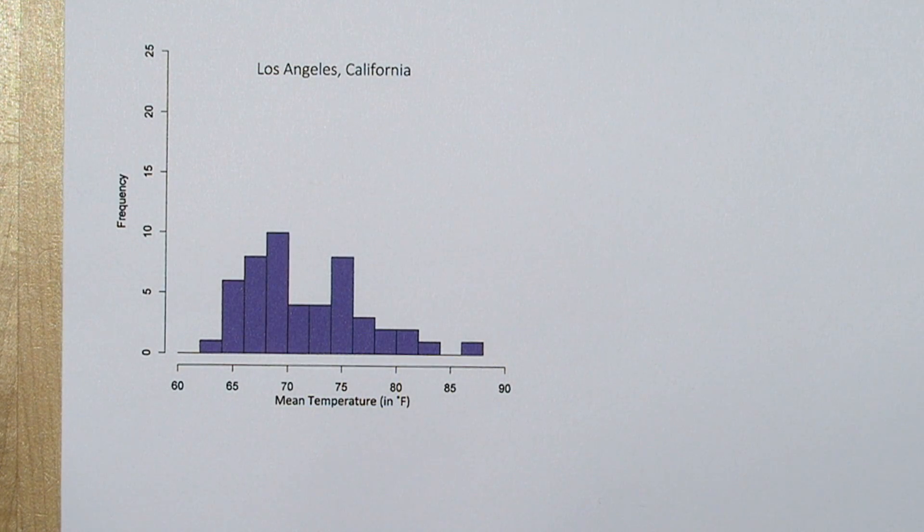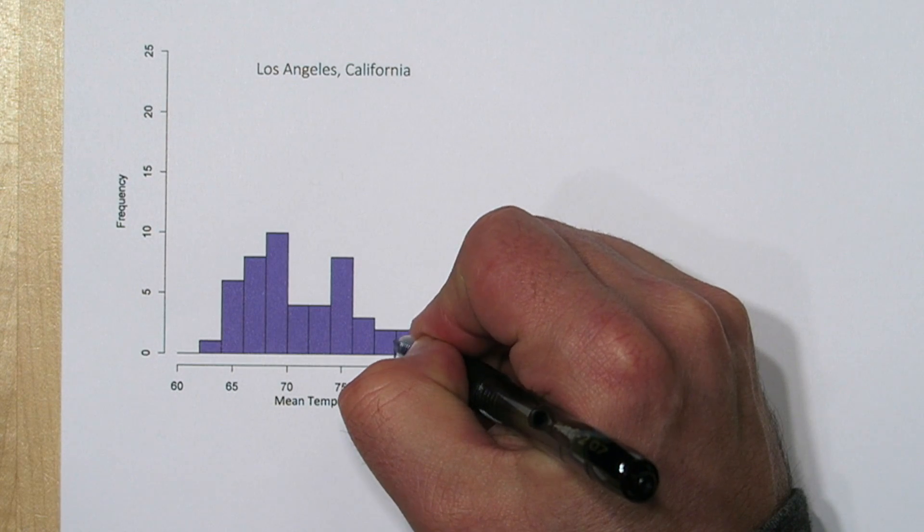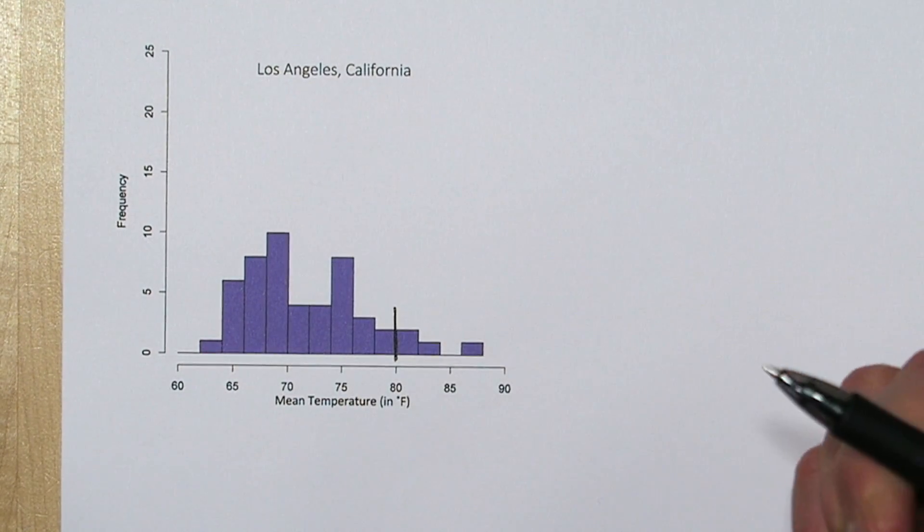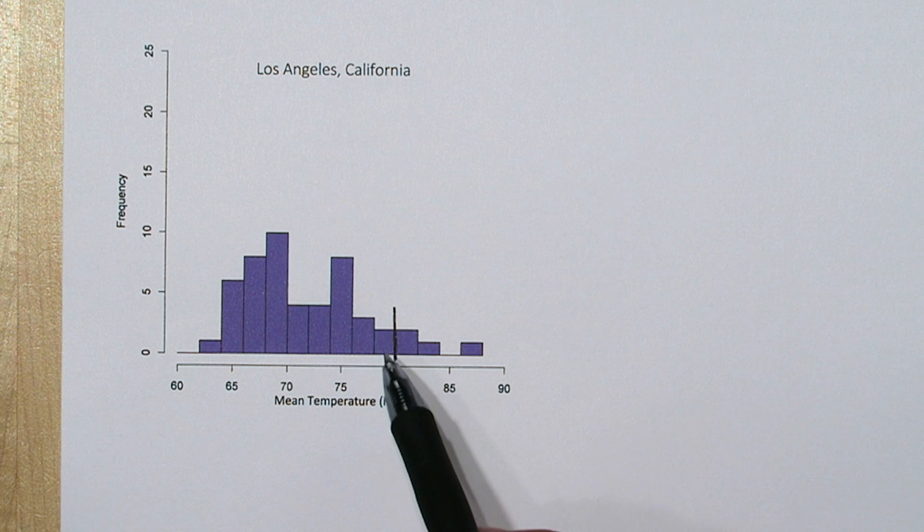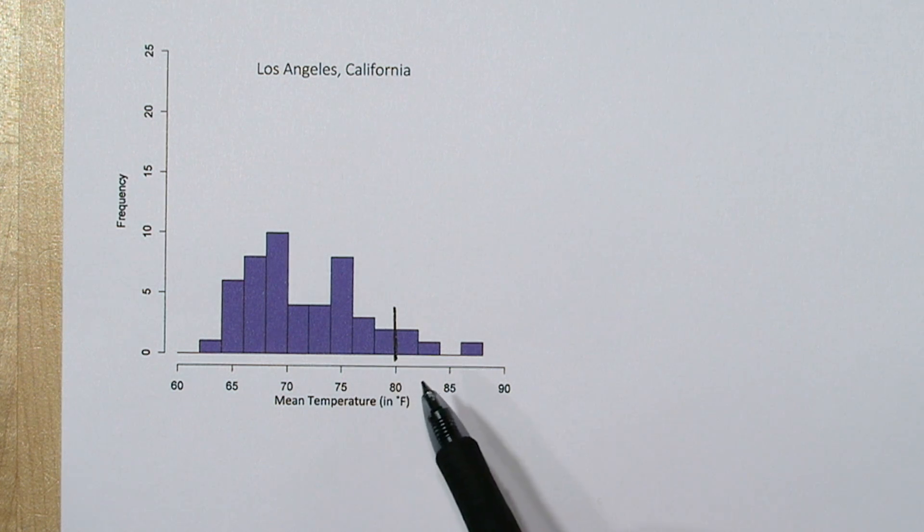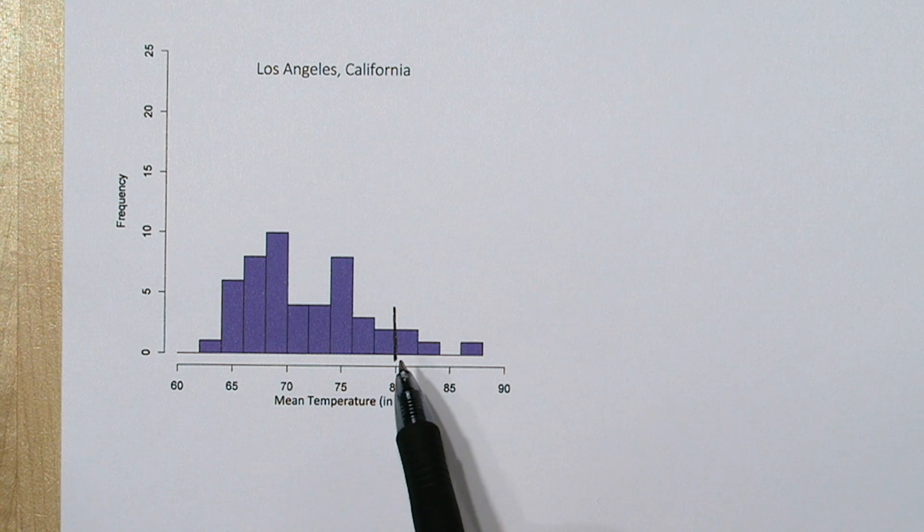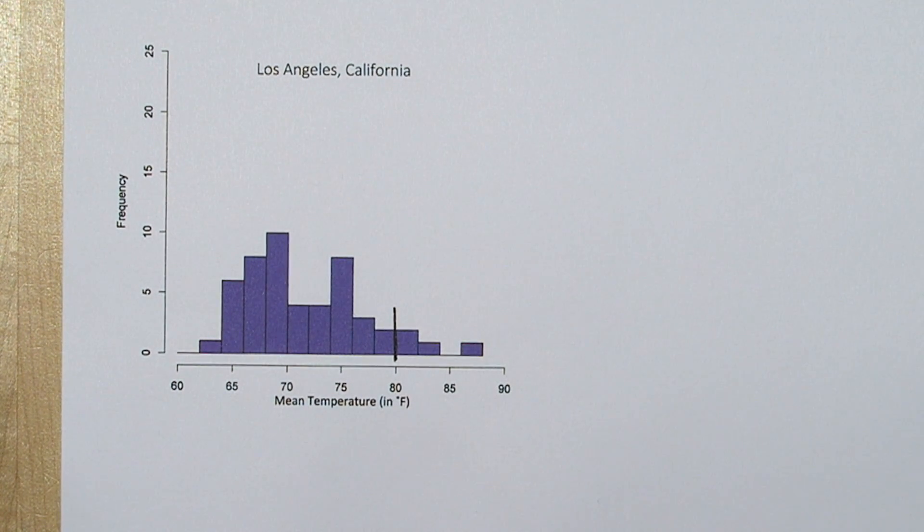Now we're going to do the same thing for Los Angeles. Here's 80 degrees. We can add up the frequencies of all these bars below 80 degrees, but we also know there's a total of 50 days. So we can just look at how many days exceeded 80 degrees and subtract that out of 50.